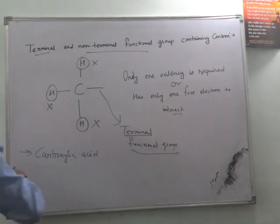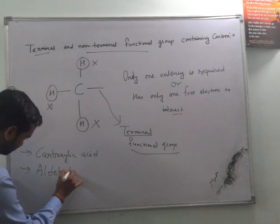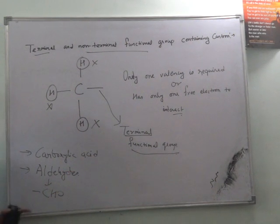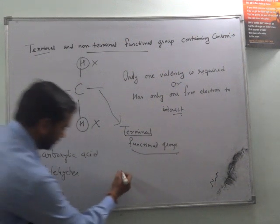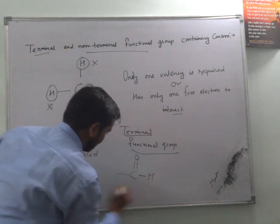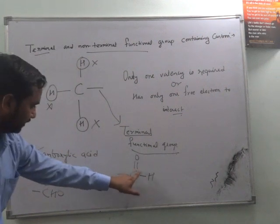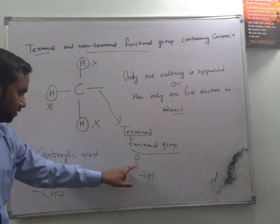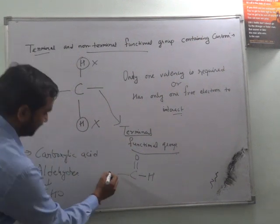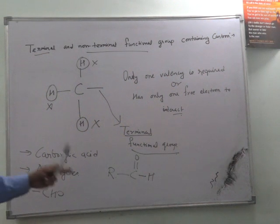That's why it's called terminal functional group. Another example, we have aldehyde. What is the formula of aldehyde? It's CHO, single bond. If I draw this structure, it is C double bond O, single bond H. And here also, the same case occurs. Three of the electrons or valencies are already occupied. Only one valency is there to interact with any of the organic compounds. So that's why it's called a terminal functional group.